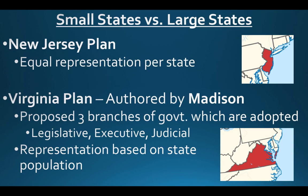Amongst the debating at the Constitutional Convention, two plans emerged. The first came out of New Jersey and became known as the New Jersey Plan, proposing that each state be provided equal representation. A state like New Jersey, much smaller than New York or Virginia, would get equal representation no matter what. This became known as the Small States Plan.